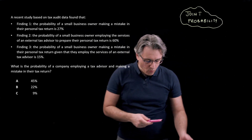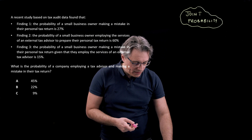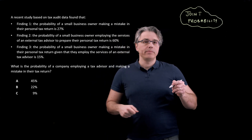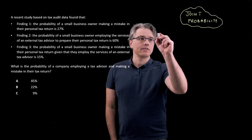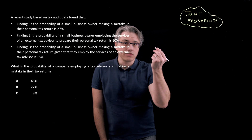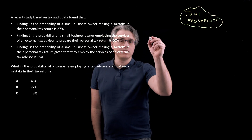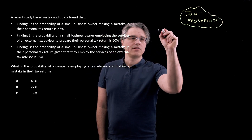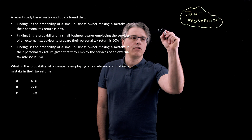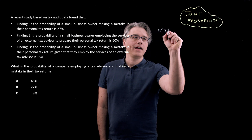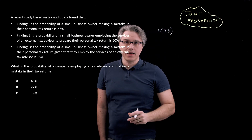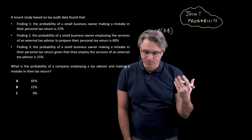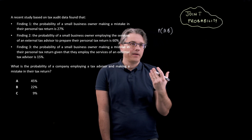When you are asked to solve a joint probability problem, you're asked essentially for the probability of two things happening at the same time — the probability of A and B happening together. This is how we denote it in mathematics.